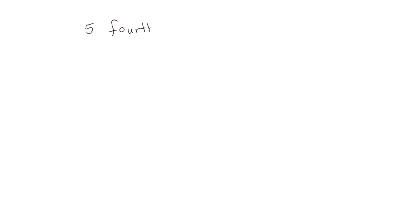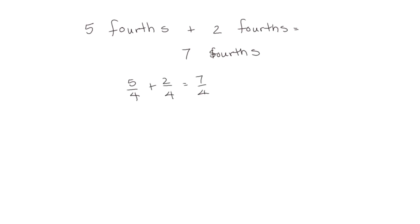We can also look at addition where our sum is going to be greater than 1. So if we have 5 fourths plus 2 fourths, we end up with 7 fourths. This is a number greater than 1, so let's decompose it into its whole number part and its fractional part. We can write this as a mixed number: 1 and 3 fourths. So 5 fourths plus 2 fourths equals 7 fourths, which equals 1 and 3 fourths.